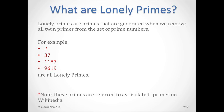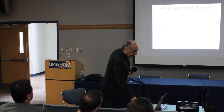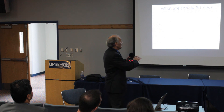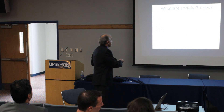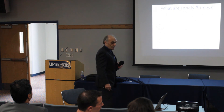So what are lonely primes? Lonely primes are primes that are generated when we remove all twin primes from the set of prime numbers. For example, 23, 1187, and 9619 are lonely primes. Note that these primes are referred to as isolated primes on Wikipedia.